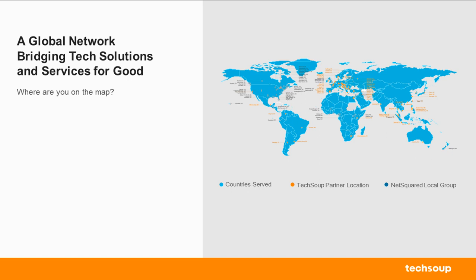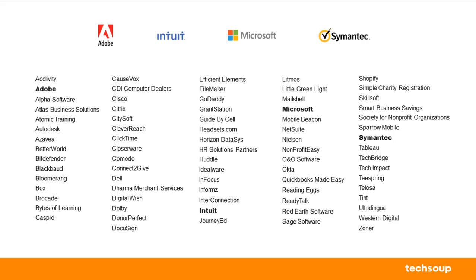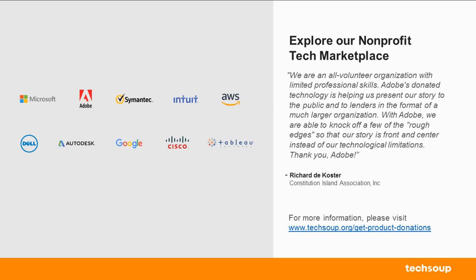It looks like the chat box is working, so I'm going to go ahead and move along. We partner with several technology companies like Adobe, Intuit, Microsoft, and Symantec. They help make our mission possible, and we offer hardware and software either discounted or donated. Our product website is techsoup.org/get-product-donation.